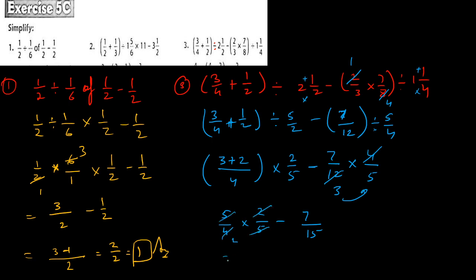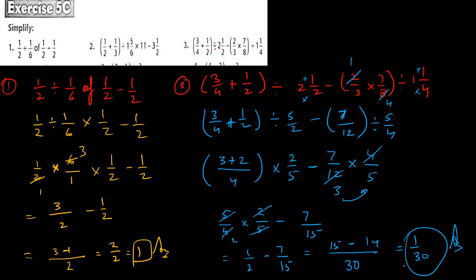Finally we have 1 upon 2 minus 7 upon 15. The LCM of 2 and 15 is 30. Thirty divided by 2 is 15, so fifteen ones are fifteen; thirty divided by 15 is 2, so two sevens are fourteen. The answer is 1 upon 30. This is the required answer.